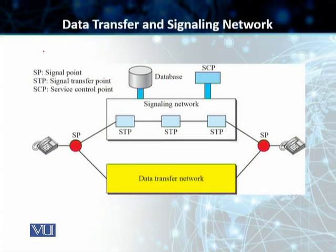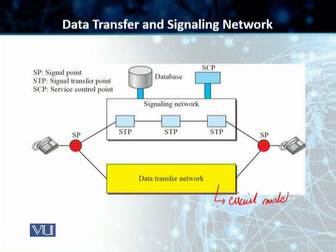We have a network here which uses two different paths: one for data transfer and the other one for the signaling network. In the case of the data transfer network, we can carry multimedia information. A circuit-switched network follows the same type of protocols and model as other networks we have discussed, though it can also be a packet-switched network. This data network carries the actual data — your multimedia information — it can be voice, it can be data as well.